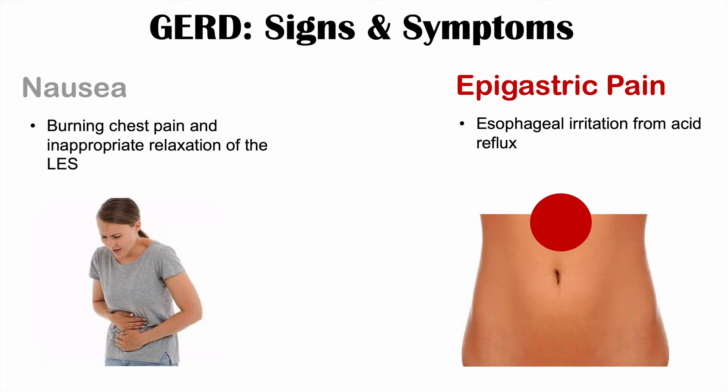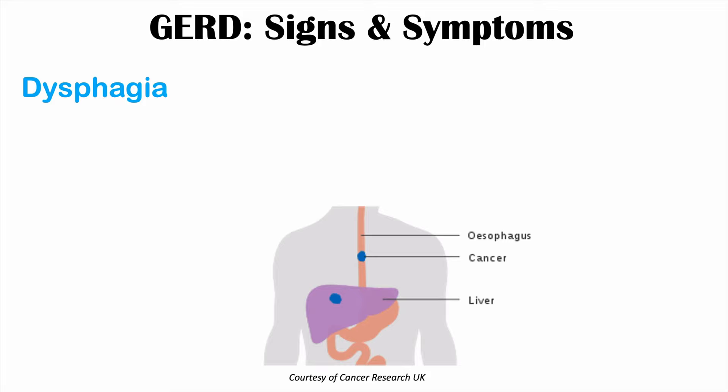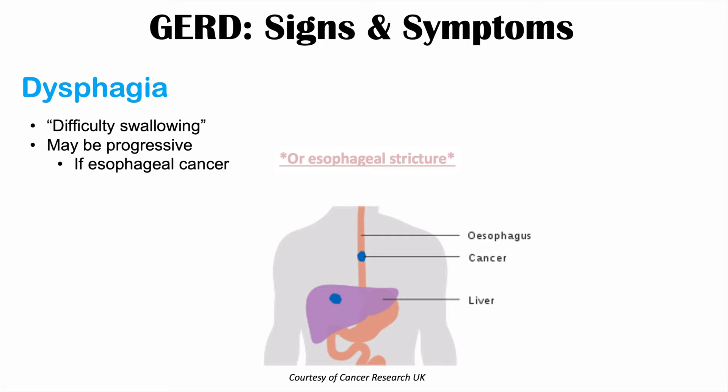Dysphagia, or difficulty swallowing, is another symptom of GERD. Individuals may note that food or fluid does not go down easily, and this can be progressive — starting with difficulty swallowing solid food and worsening to difficulty swallowing fluids. Dysphagia is more often seen in those with esophageal cancer, which can develop if GERD is not properly treated.